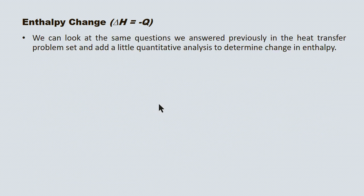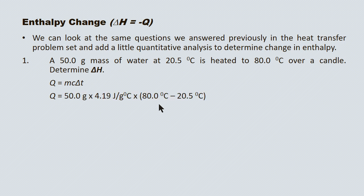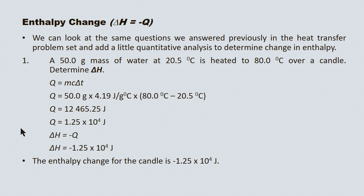So we can look at the same questions we did previously and add quantitative analysis to determine the change in enthalpy of the chemical system. Taking the very first question: 50.0 grams of water at 20.5 degrees Celsius is heated to 80.0 degrees Celsius over a candle — determine delta H. The approach is the same: Q = mcΔT, substitute in, apply sig digs. We know that ΔH is equal and opposite to the energy change of the surrounding water, so ΔH = −1.25 × 10⁴ joules. The candle loses 1.25 × 10⁴ joules of energy heating that water.